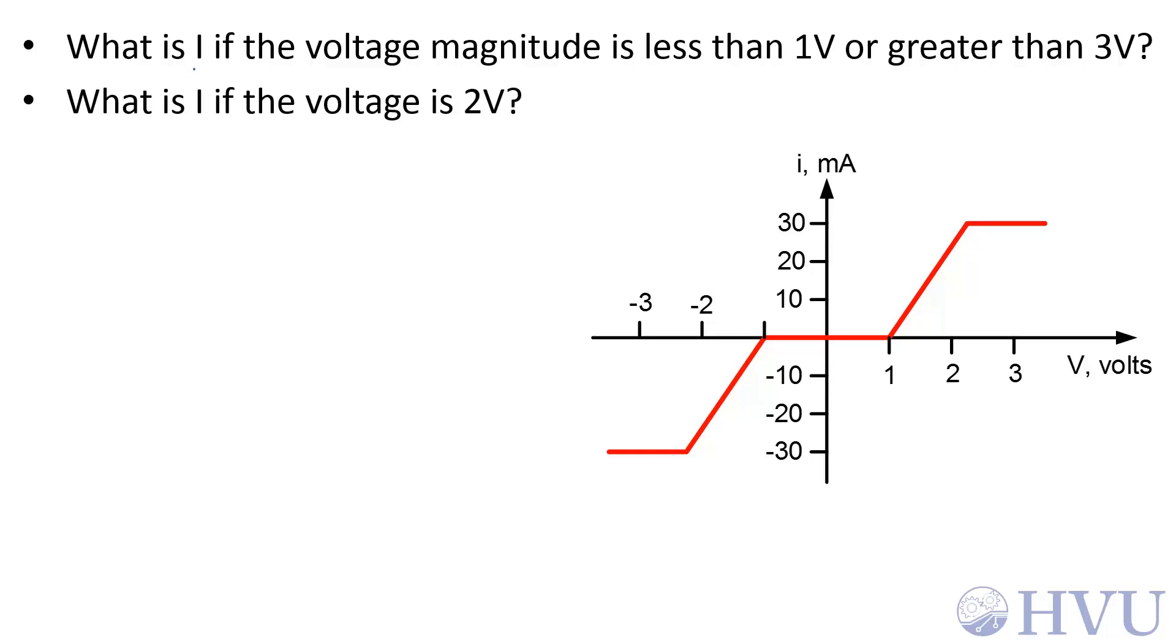In this example, we want to find I, the current, if the magnitude of the voltage is less than 1 volt or greater than 3 volts. Let's do less than 1 volt first. If the magnitude of V is less than 1 volt, that means V is between negative 1 volt and positive 1 volt. So V is somewhere in this range. Over this entire range of voltages, the current equals 0, so I equals 0 milliamps.